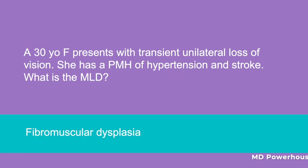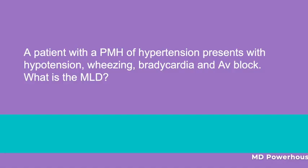A patient with a past medical history of hypertension presents with hypotension, wheezing, bradycardia, and AV block. What is the most likely diagnosis in this patient? Beta-blocker toxicity.